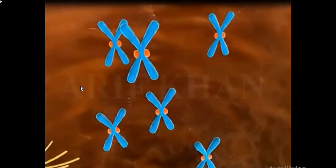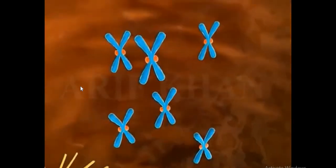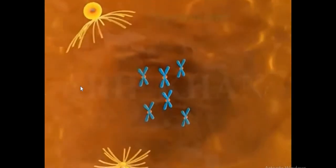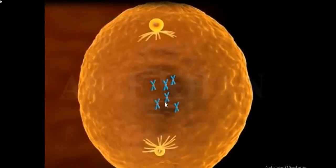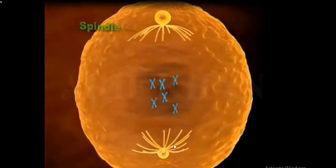The nucleus as well as nuclear membrane, all of them start getting disassociated. So this is what happens in the prophase, and the centrioles move to the opposite poles of the cell.